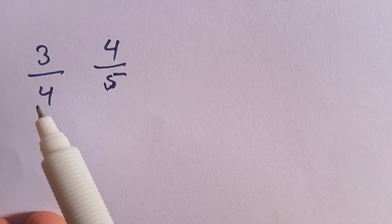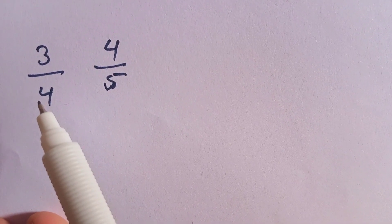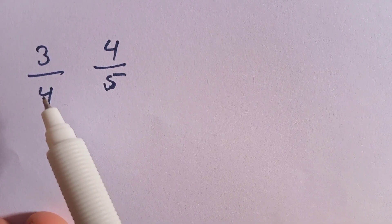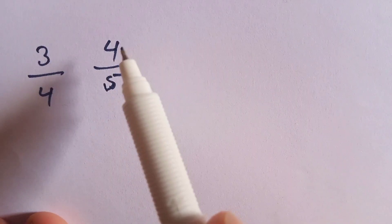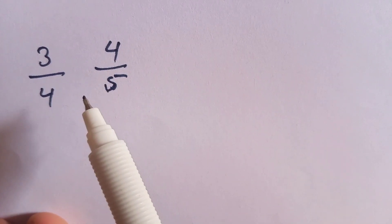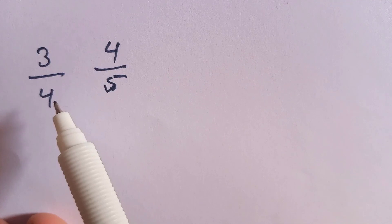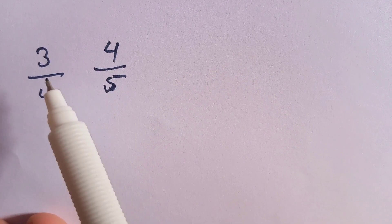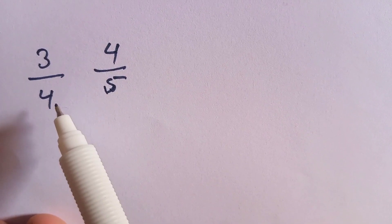Hi everyone. In this video I'm going to show you how to compare fractions with different denominators. Here we see 3 over 4 and 4 over 5, and we cannot directly decide which fraction is greater. We know that the size of a fraction depends on the numerator and the denominator.